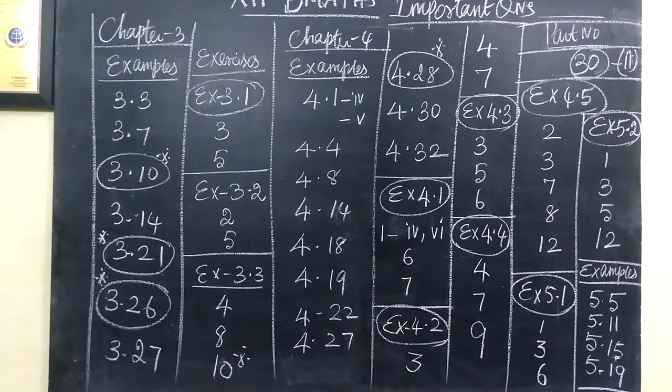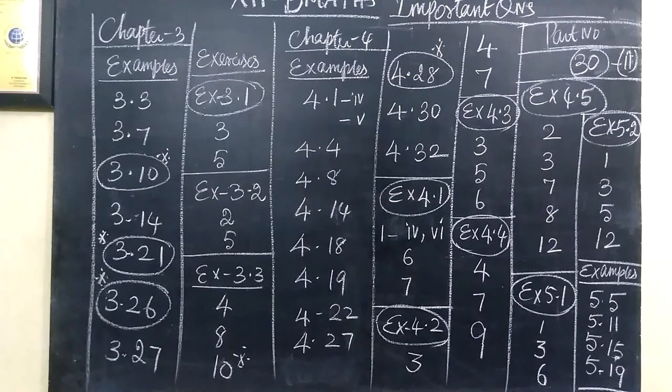4.27 and 4.28 more important, 4.30, 4.32. Then exercise 4.1 question number 1, subdivision 4 and 6, then question number 6 and 7.